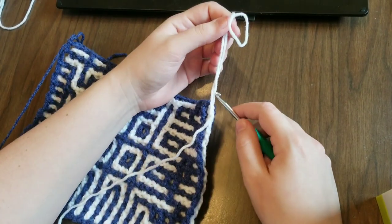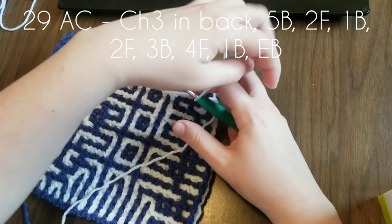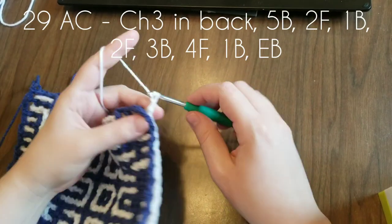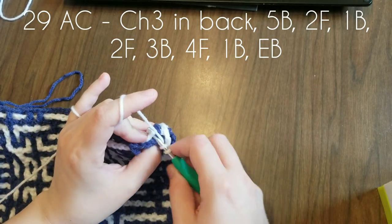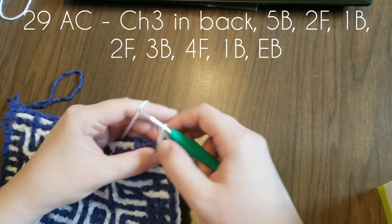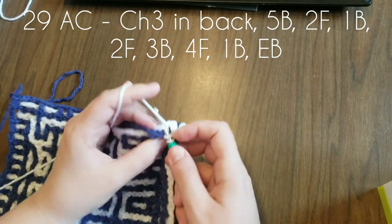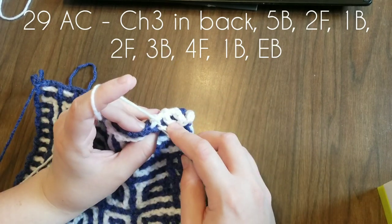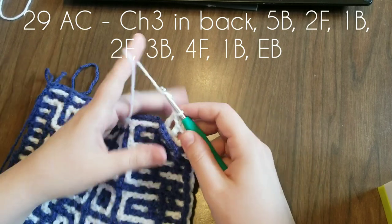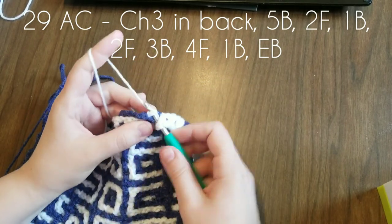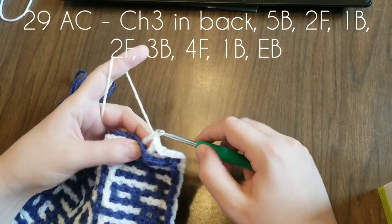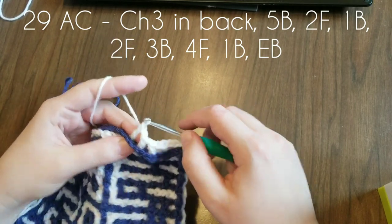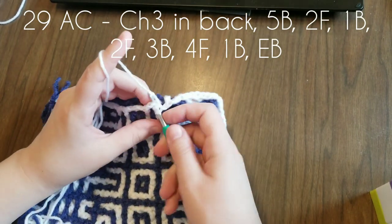This will be the last row we do for this video. Row 29. Chain three in the back. One, two, three. Five stitches in the back—one, two, three, four, and five. Two front. I can hear my daughter just got home. Dad took them out on a walk, so she's going to come in and she's probably going to say something. One in the back. Oh, it's my son. He also says things, but he's not as good at stopping. He's only three. Two in the front.